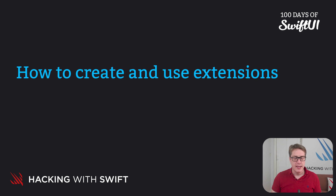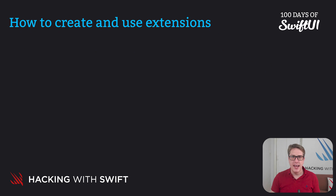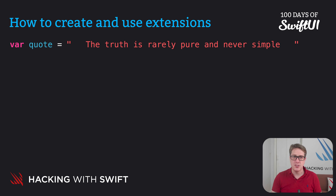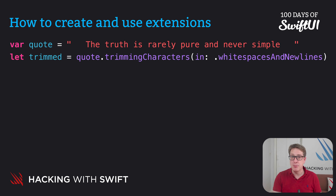For example, here is a string that has whitespace — space characters — at the start and end, multiple of them. If we want to remove the whitespace so it starts with a capital T and ends with a lowercase e, we could use this code: let trimmed = quote.trimmingCharacters(in: .whitespacesAndNewlines). And that'll do it.